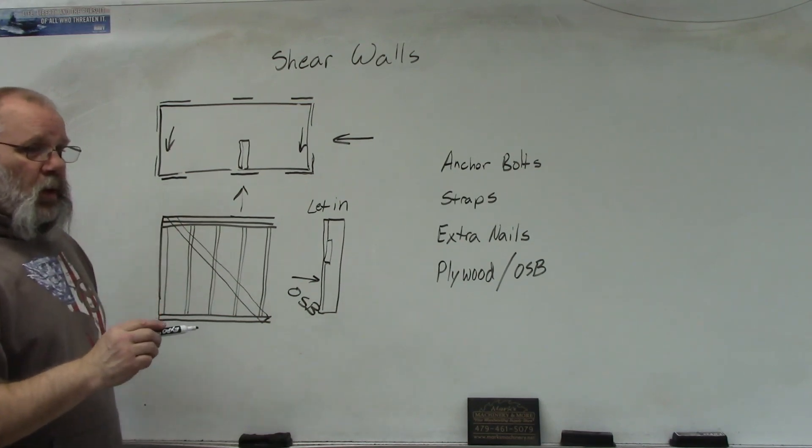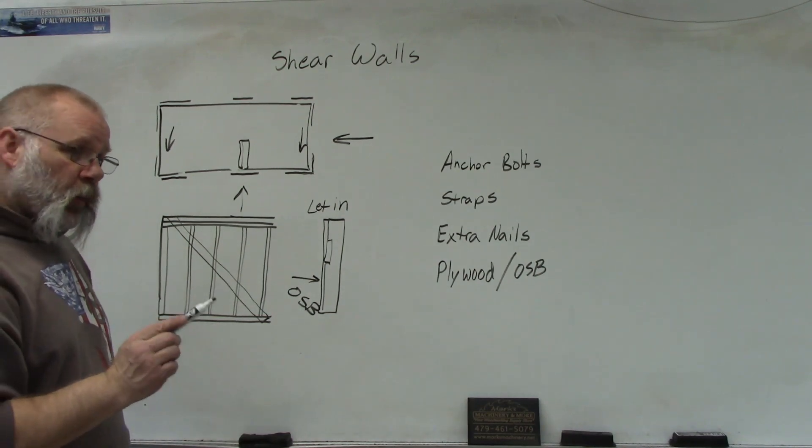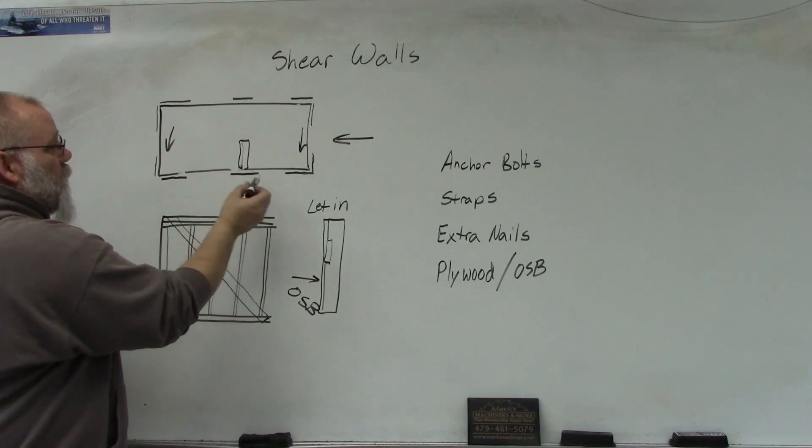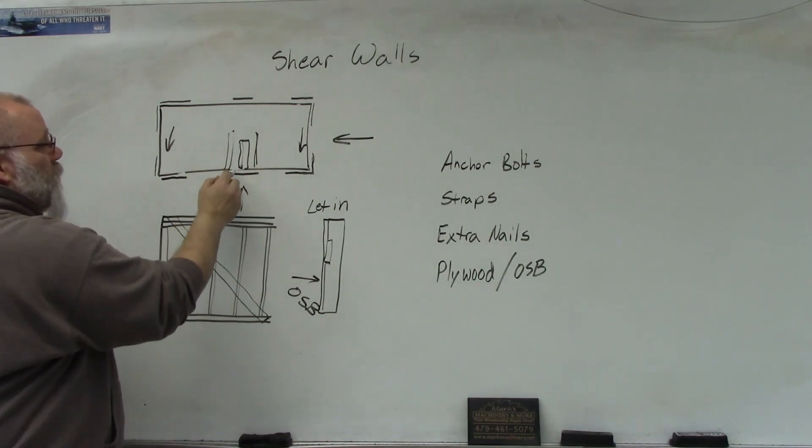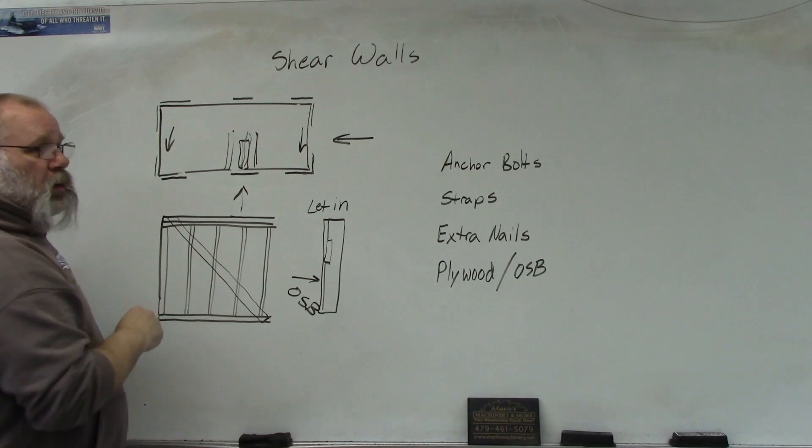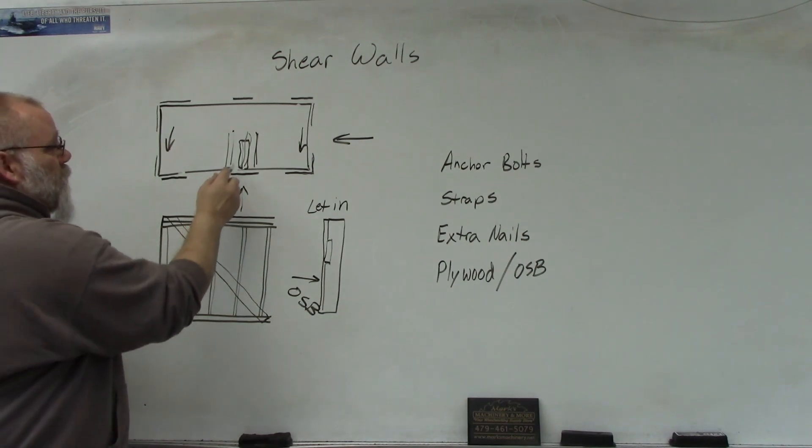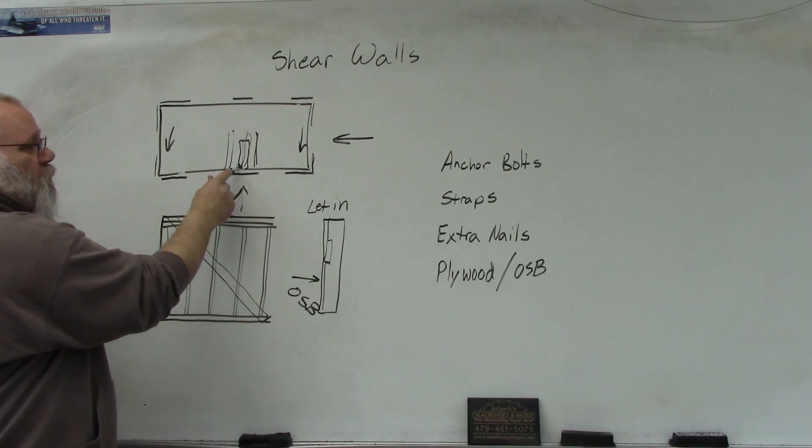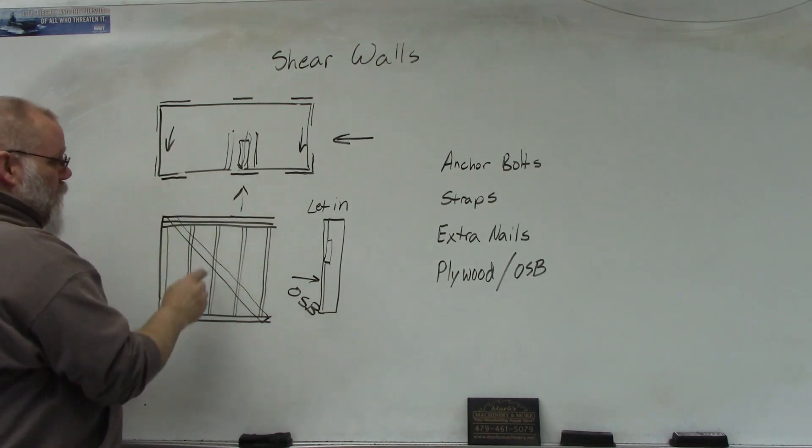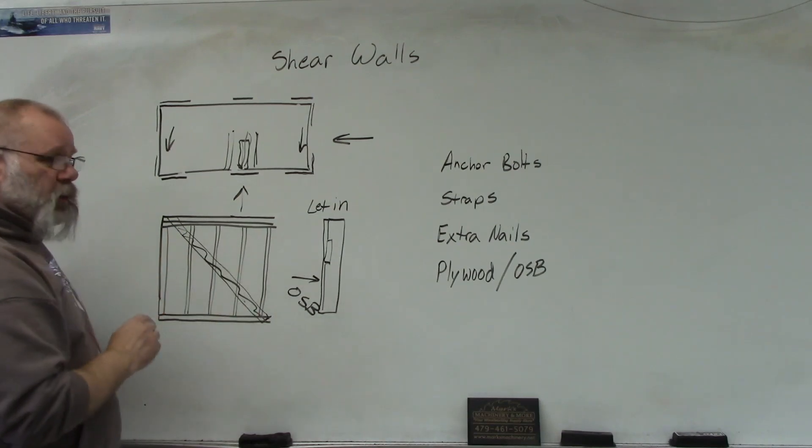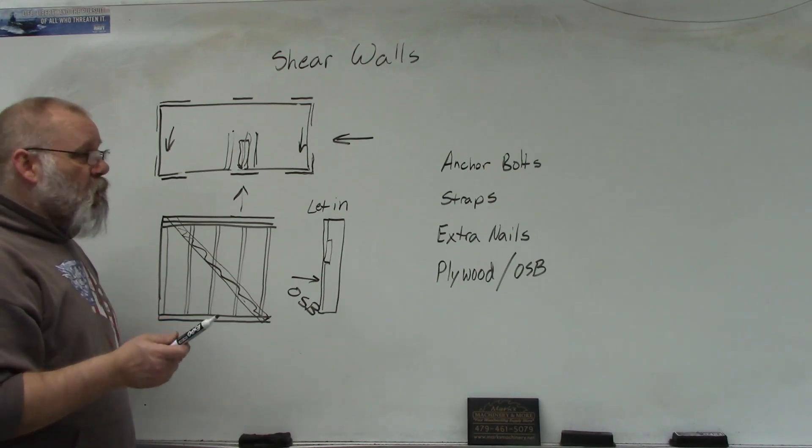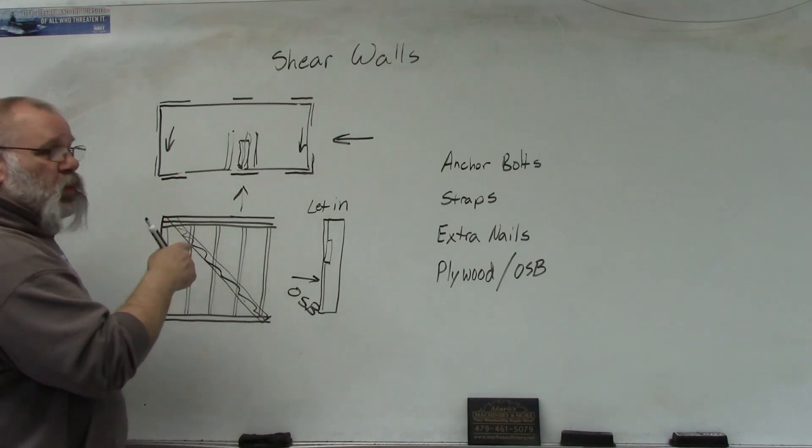So identifying a shear wall when remodeling is very important. So especially if it's on an interior wall, it may be parallel to your rafters, but like I said, if it has that drywall on, or OSB on it, or plywood, or it's got a let-in brace, this let-in brace on there, then it's a shear wall, and then you need to look at the specific codes of can you remove it.